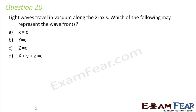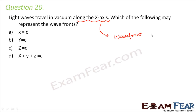Light waves travel in vacuum along the x-axis. Which of the following may represent the wavefronts? From our knowledge of wavefronts, we know that the direction of propagation of a wave is always perpendicular to that of the wavefront. Here the light wave travels along the x-axis, so we can conclude that the wavefront must be perpendicular to the x-axis.